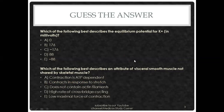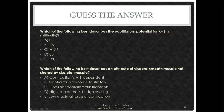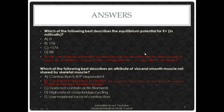Which of the following best describes an attribute of visceral smooth muscle not shared by skeletal muscle? The options include: contracts in response to stretch — skeletal muscle does not do this — contains actin filaments, high rate of cross-bridge cycling, and low maximal force of contraction. The answer is that visceral smooth muscles contract in response to stretch, which skeletal muscles do not.